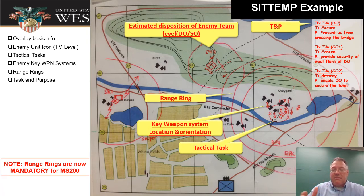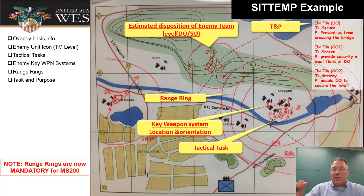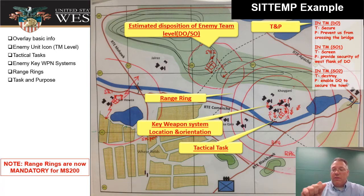The last thing is the task and purpose written out. For their team that's the decisive operation — their task is to secure, purpose is to prevent us from crossing the bridge. Then supporting operation one has its task and purpose, and supporting operation two has its task and purpose. So we don't just have the symbol for the task, but we can specify the full task and purpose.